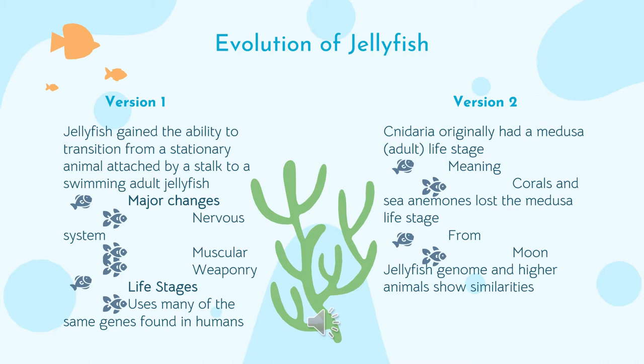Their weaponry refers to their stinging cells, which are called nidocytes. Throughout their different life stages, their genome doesn't drastically change — their genes basically stay the same. So they can have that complex life history and use those same genes. They actually do use some of the same genes that are found in humans.